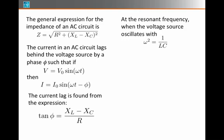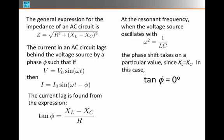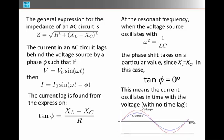At the resonant frequency, when omega squared equals 1 over LC, then we have XL equals XC, and in this special case, at resonance, the phase shift is 0 degrees. This means that the current oscillates in time with the voltage. There's no time lag whatsoever.